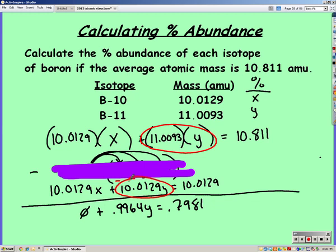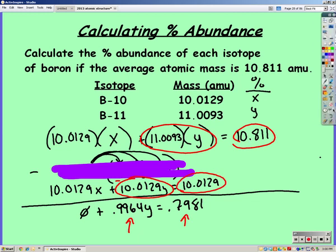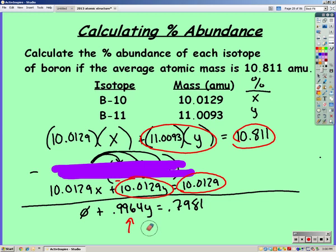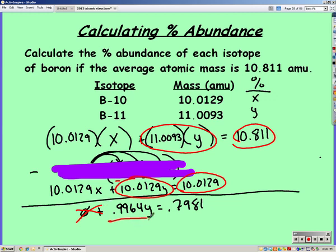So just to make sure that you see that, we subtracted those two to give me this value. And we subtracted these two to give me this value. Now it's just a simple algebra problem. I need to isolate my y, so I'm going to divide by 0.9964.